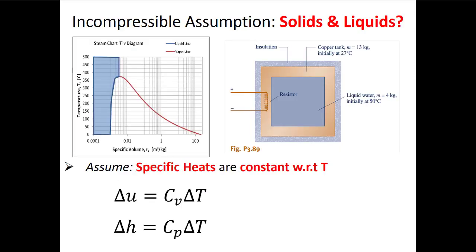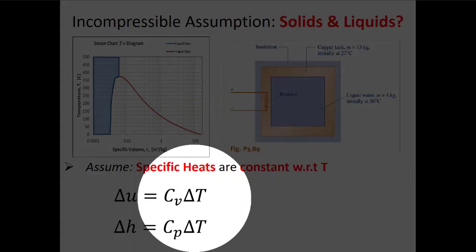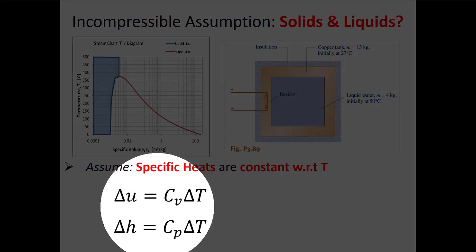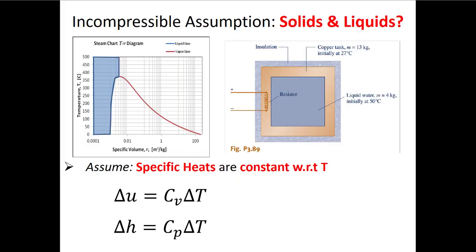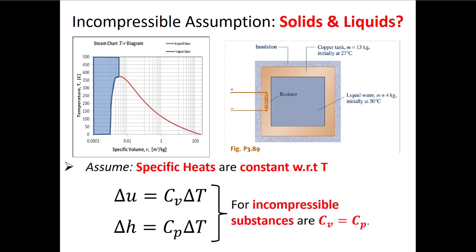Last class we talked about solids and liquids — things that are incompressible. For incompressible materials it's not a bad assumption to say specific heats are constant, and if they're constant you can find delta U as cv times delta T and delta H as cp times delta T. The cool thing about incompressible substances is that cv equals cp, so there's really only one specific heat whether you're talking about liquids or solids.